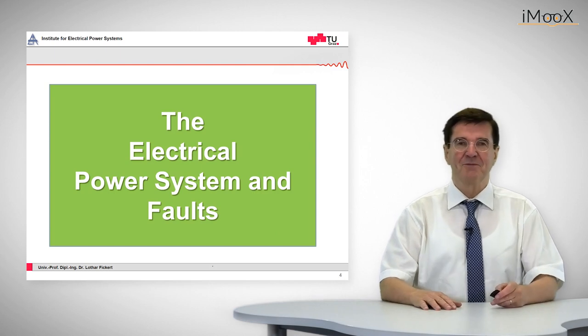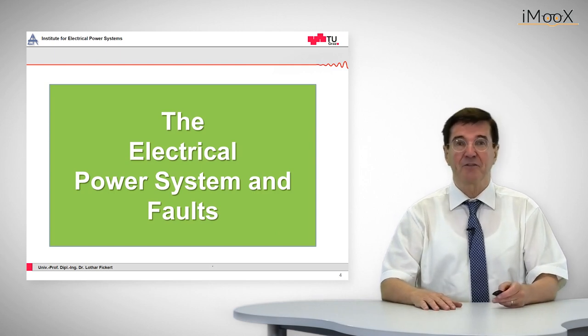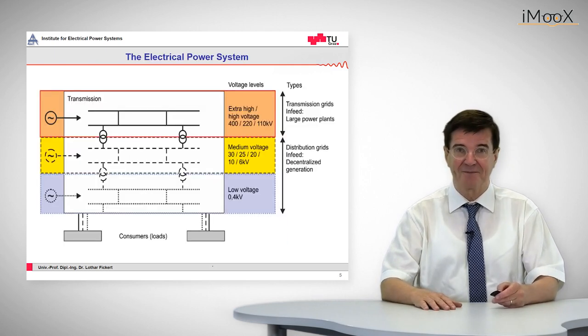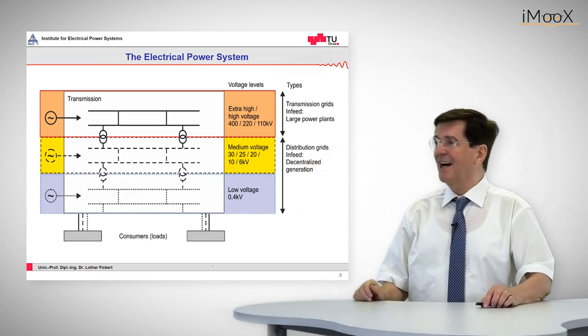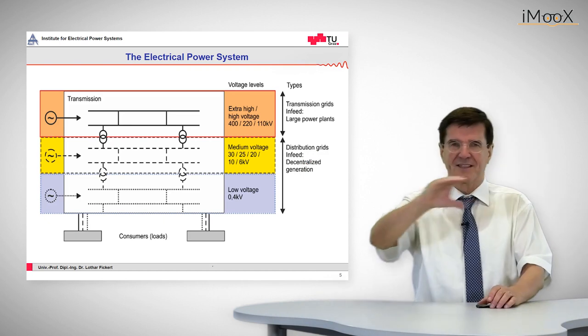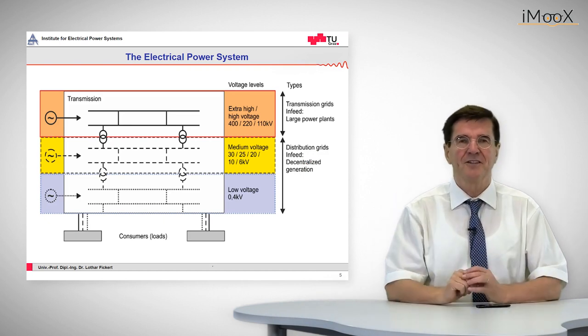First, let's talk about the electrical power system and the faults that may occur in such a system. The electrical power system, as we can see here, is made up of different layers.